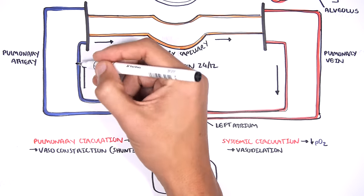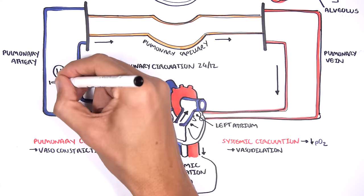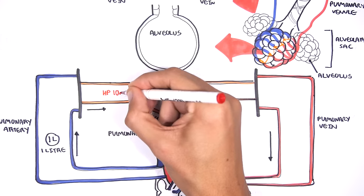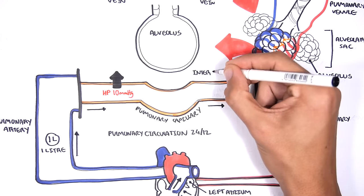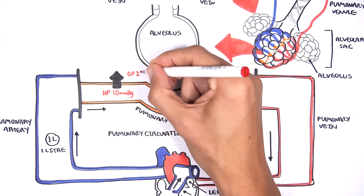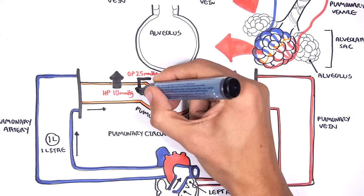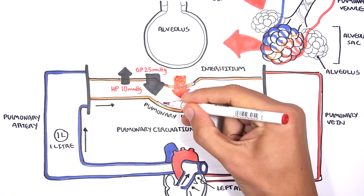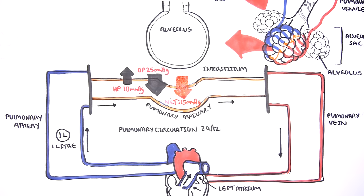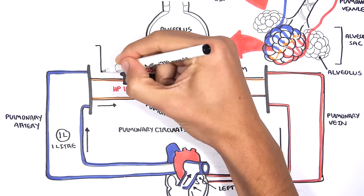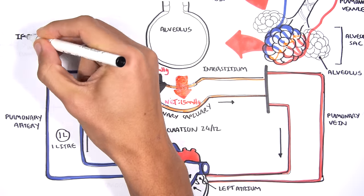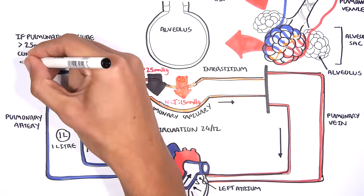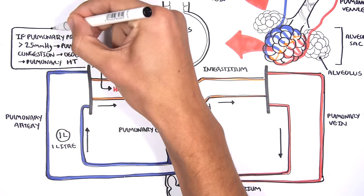The volume of blood in the pulmonary vessels at any one time is about one liter, of which less than 100 mils is in the pulmonary capillaries. Pulmonary capillary pressure is about 10 mmHg, whereas the oncotic pressure is 25 mmHg, so that an inward directed pressure gradient of about 15 mmHg keeps the alveoli free of all but a thin film of fluid. When the pulmonary capillary pressure or pulmonary arterial pressure is more than 25 mmHg, pulmonary congestion and edema results, which really means pulmonary hypertension.